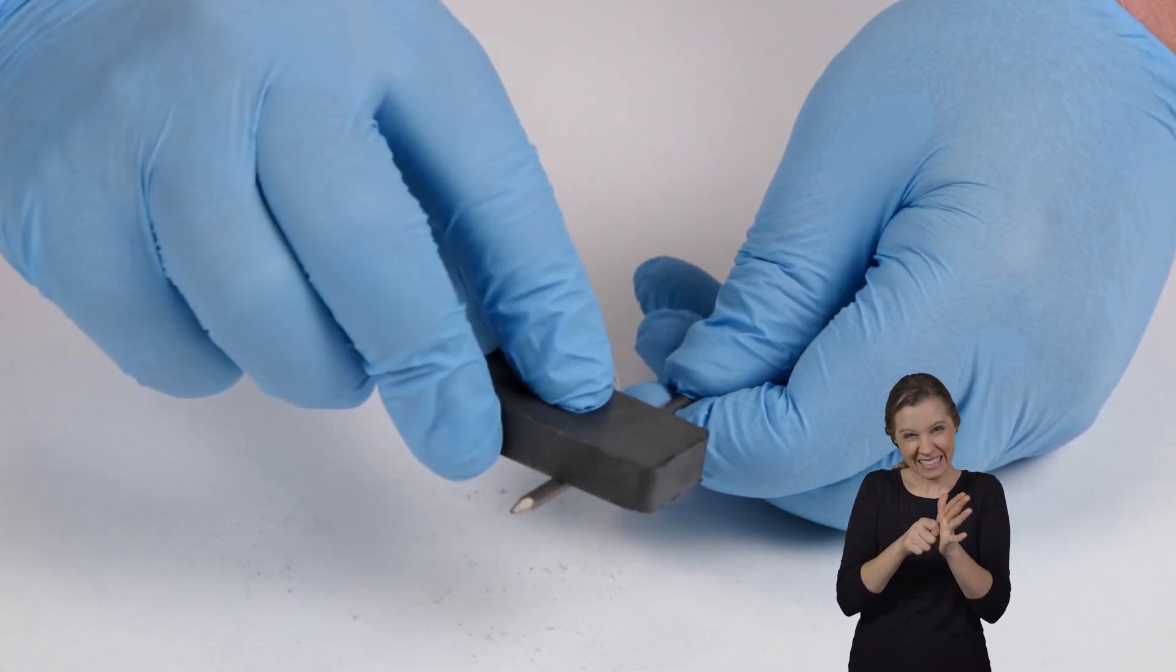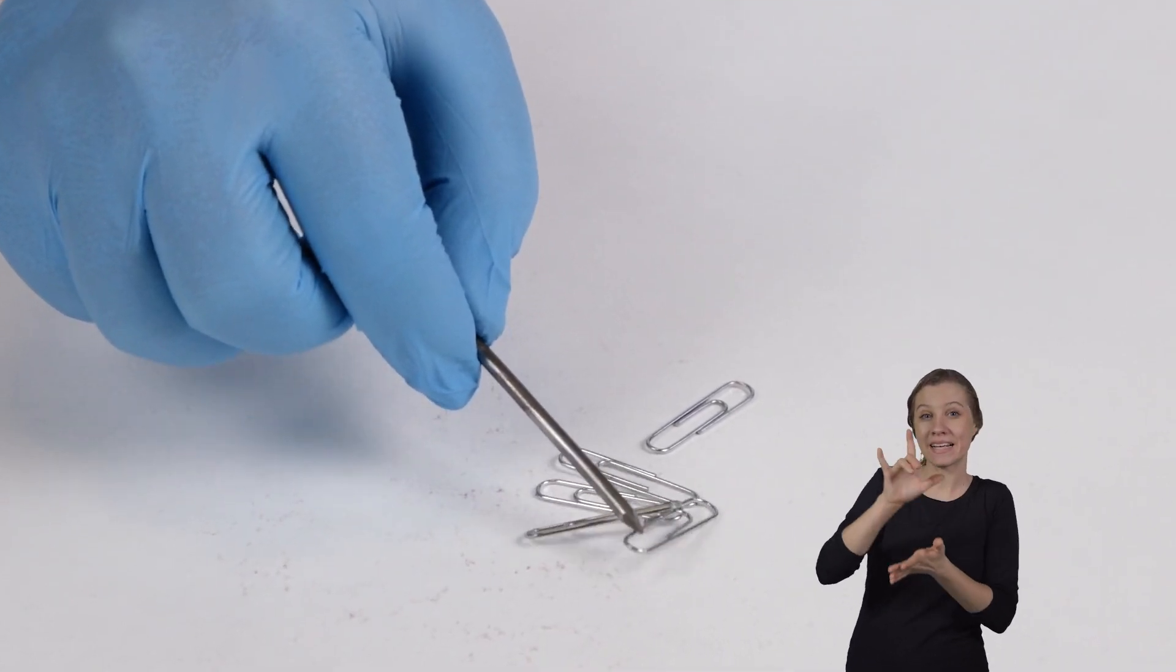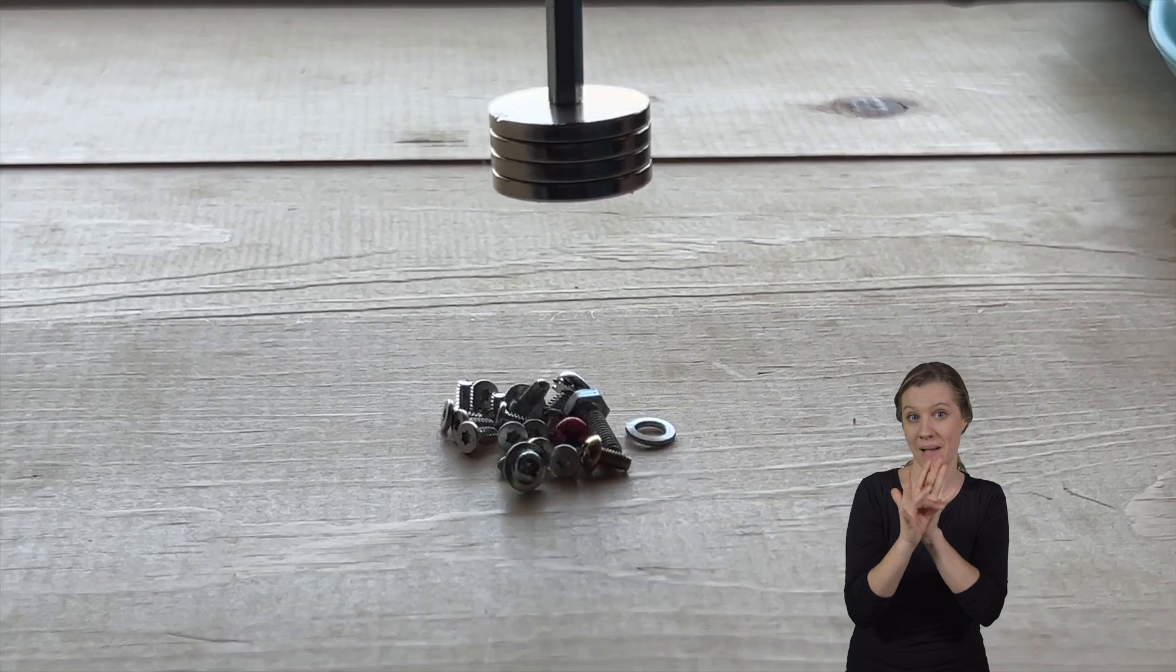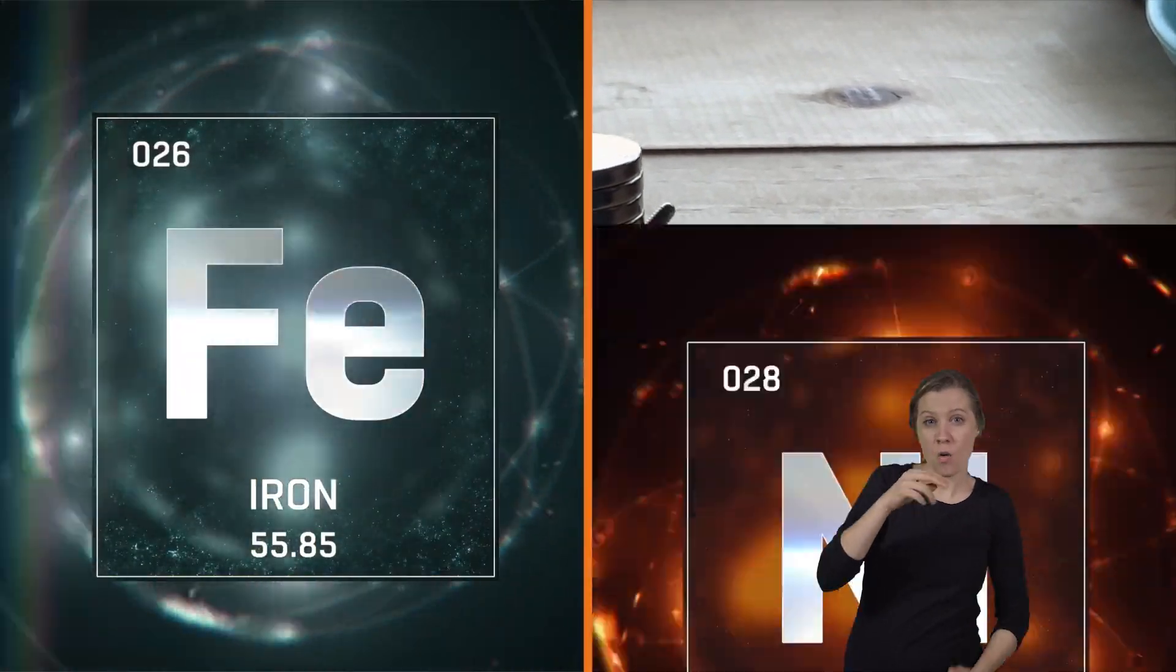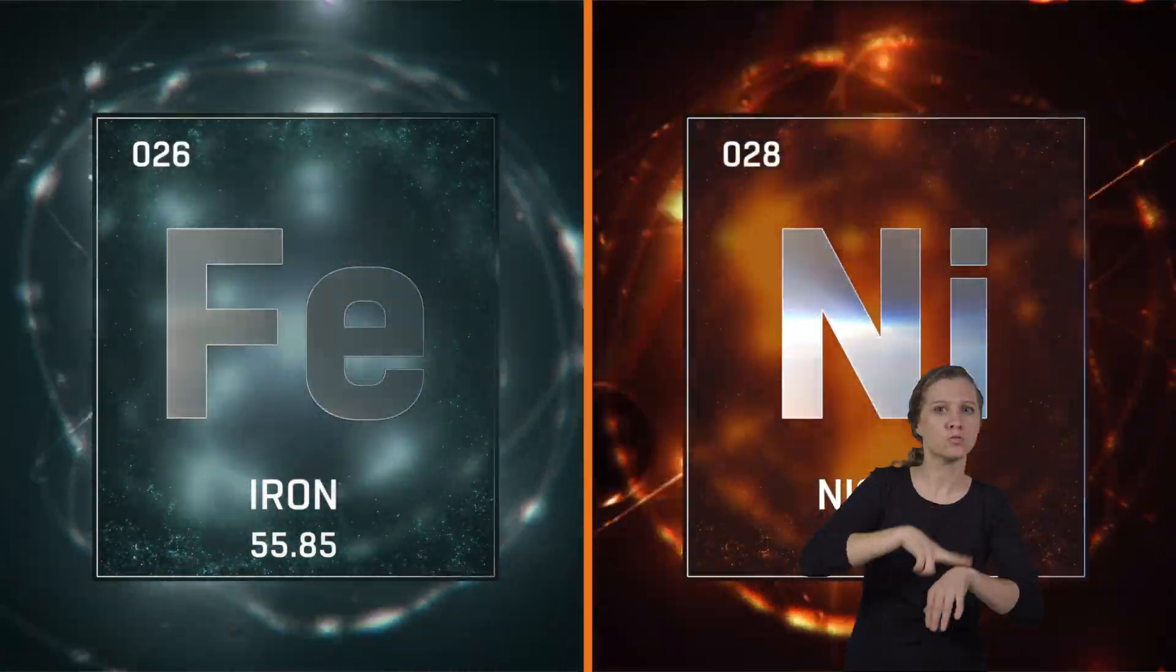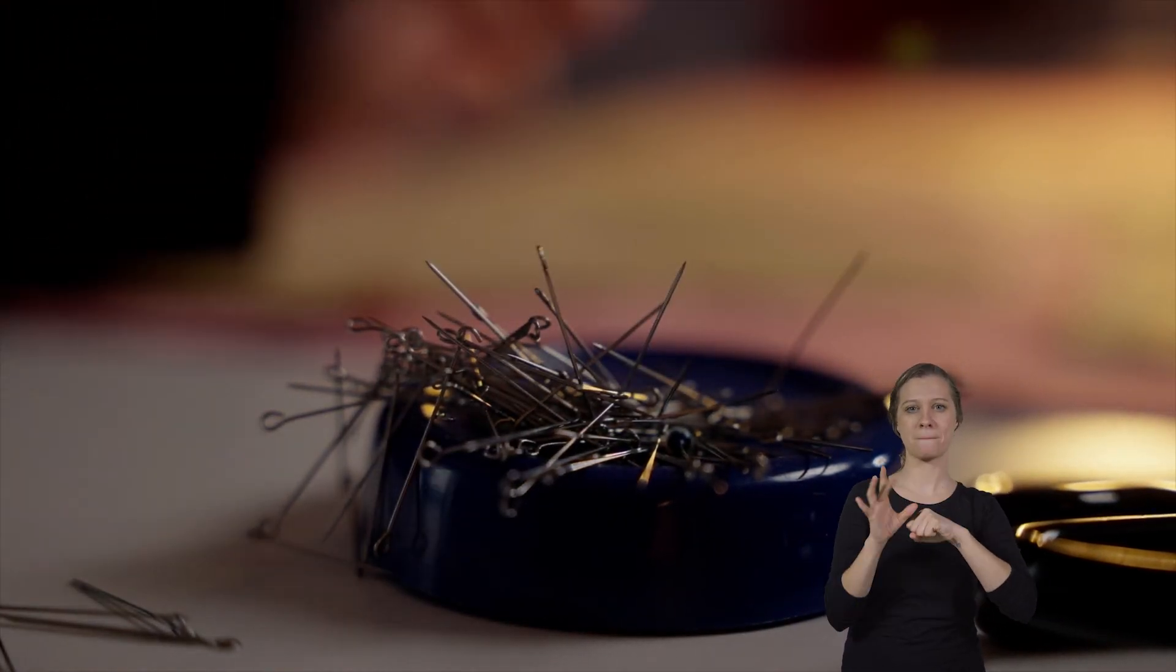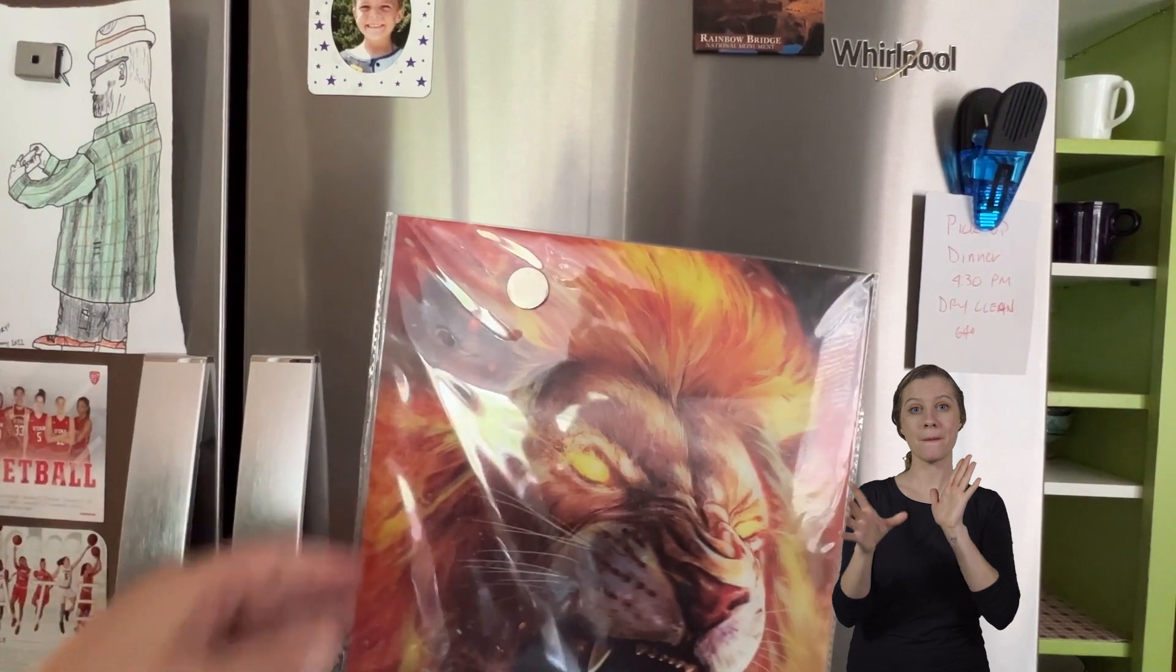Permanent magnets are made from materials like iron or nickel that are naturally or chemically magnetized and already have their own magnetic fields, like the magnets you use on your refrigerator.